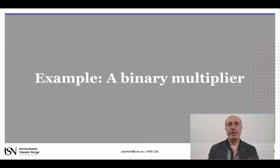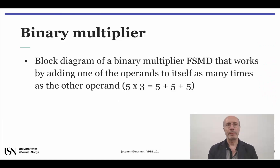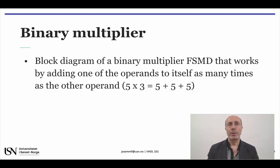Let's consider the first example: a binary multiplier. Binary multiplication can be carried out by a fully combinational block, as you may recall from the 74181 ALU. That will be the fastest solution, but also the costliest, since it requires a large number of parallel resources.